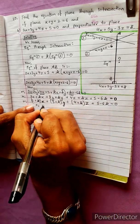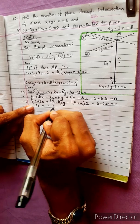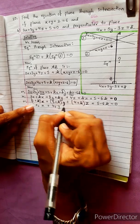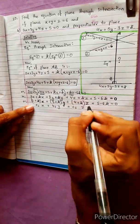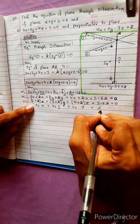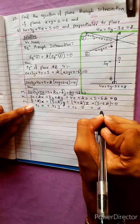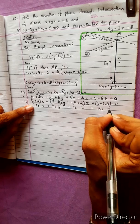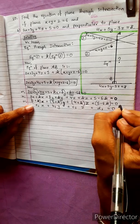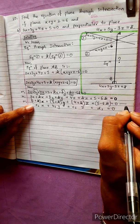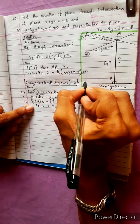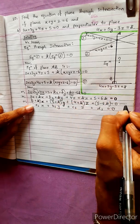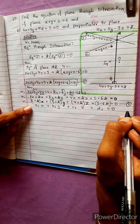Comparing with the standard form: a1x plus b1y plus c1z plus d1 equal to 0 — equation 1, 2, 3, 4. This is an important equation.